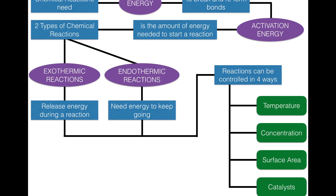Let's finish off our graphic organizer. Chemical reactions need energy to break and reform bonds. Activation energy is the amount of energy needed to start a reaction. Regarding energy, there are two types: endothermic reactions, where you need energy to keep the reaction going, and exothermic reactions, where energy is released during the reaction. You can control the speed of a reaction in four ways: temperature, concentration, surface area, and a catalyst — a substance that speeds up or slows down the reaction without being changed itself. That's your final lesson in the chapter on chemical reactions. Hope you enjoyed it and learned something — if you have any questions, please let me know. Thanks for watching.